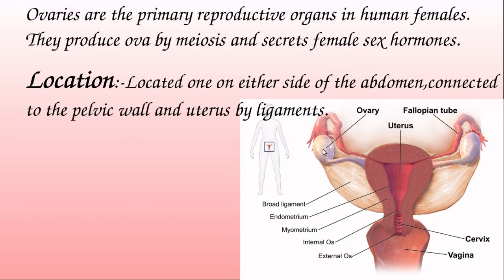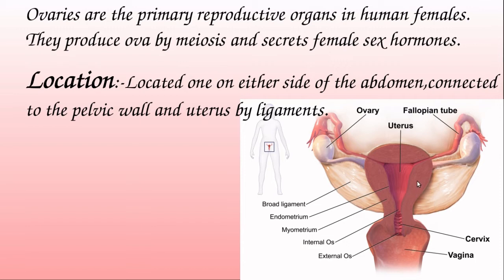The ovaries are located one on either side of the lower abdomen, connected to the pelvic wall and uterus by ligaments. They are suspended in the pelvic cavity, with connections to both the pelvic wall and the wall of the uterus.